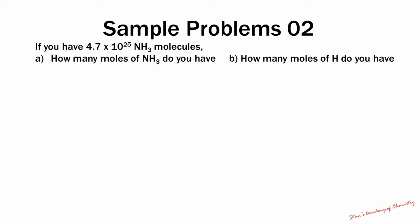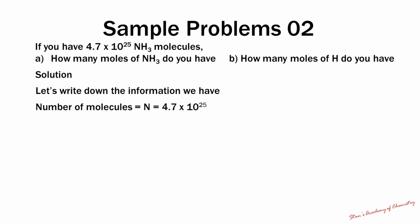Sample problem 2: in this problem, we are going to calculate the number of moles from the total number of molecules we have. If you have 4.7 × 10²⁵ ammonia molecules, how many moles of NH₃ do you have? And how many moles of H do you have? Let's solve the problem. First, we will write down the information we have: number of molecules N is 4.7 × 10²⁵.